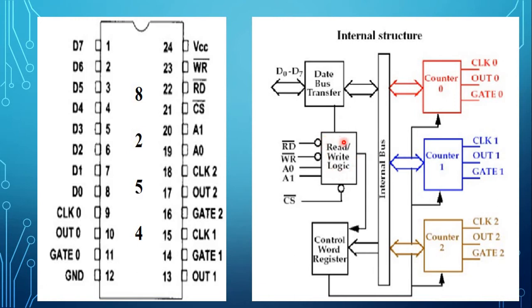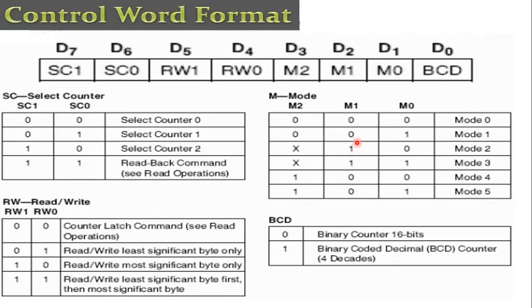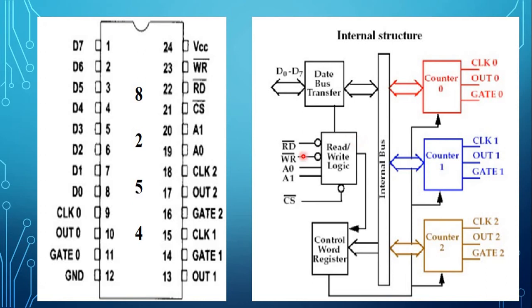The second block is control logic, which has 5 signals: read signal, write signal, chip select signal, A0, and A1. This section accepts input from these pins and generates control signals for overall device operation. The third block is the control word register. A control word is written into this register which specifies the counter to be used, its mode, and either a read or write operation. However, the control word register is not available for a read operation.